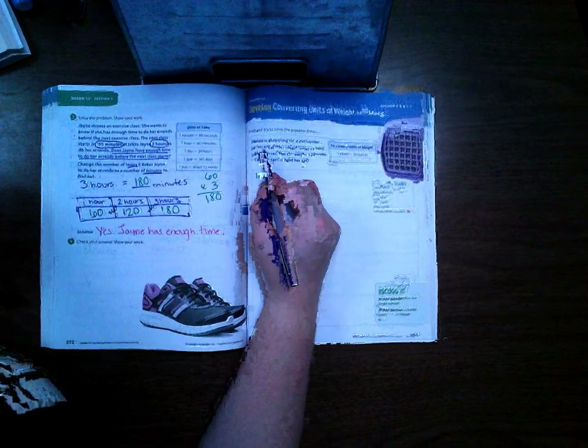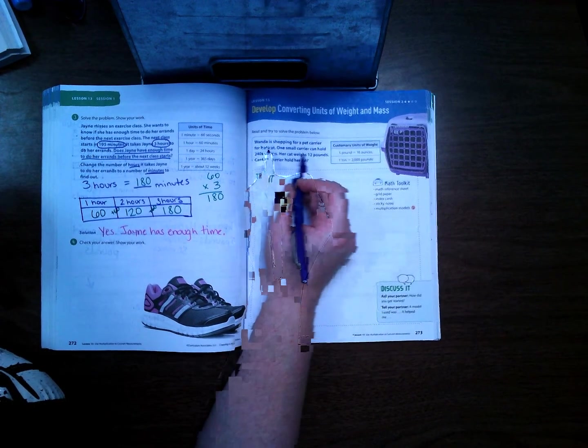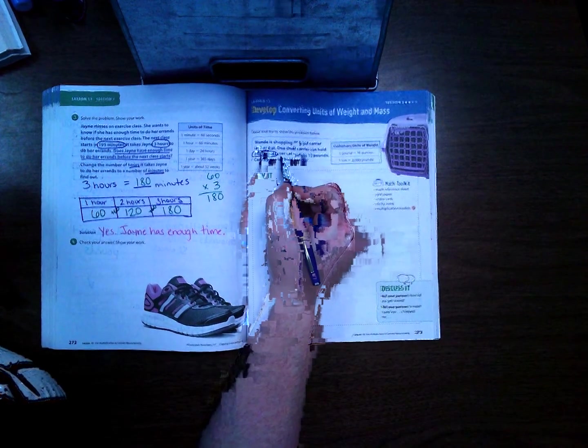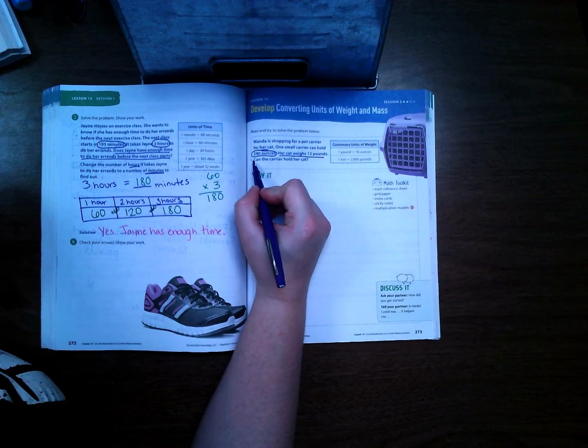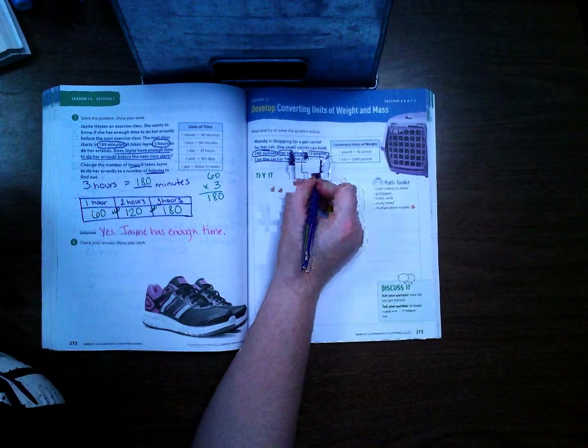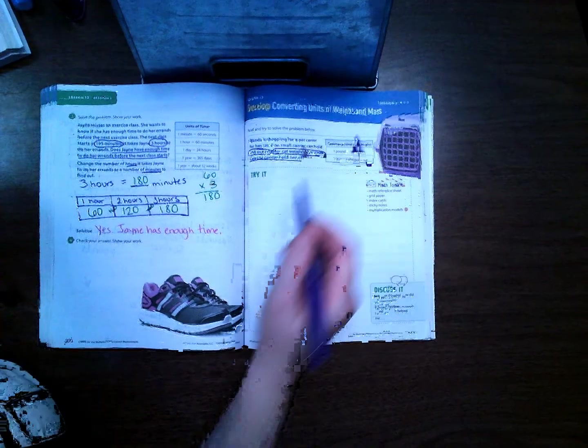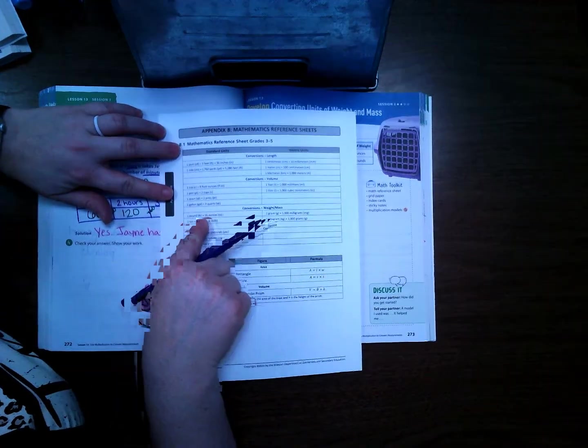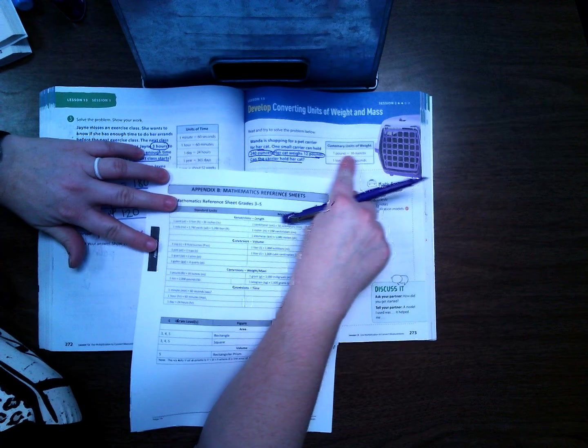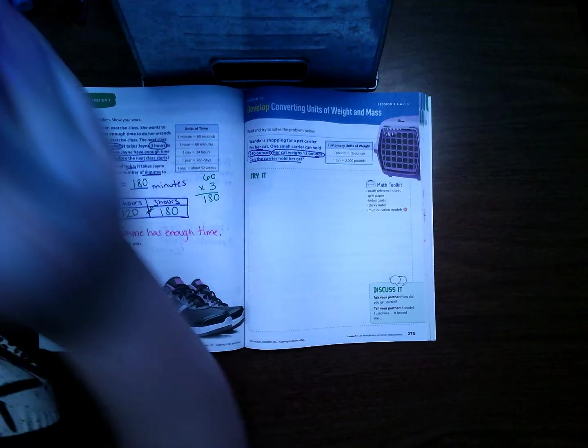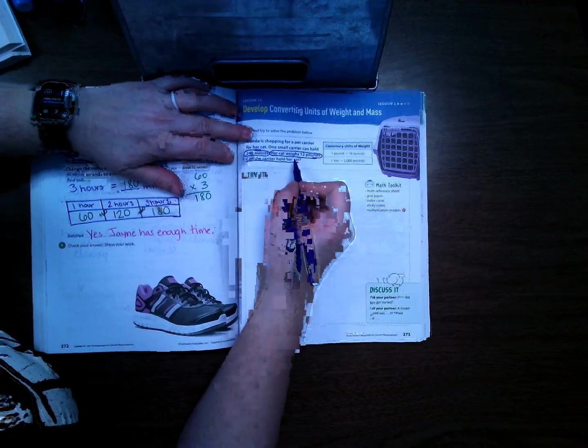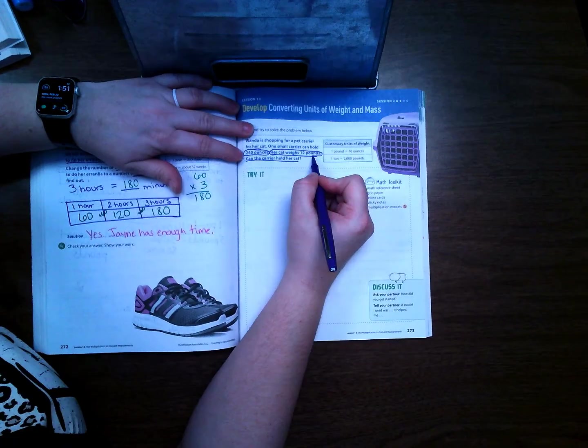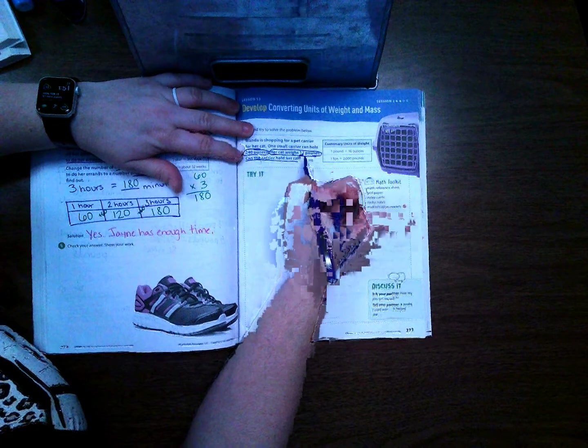Wanda is shopping for a pet carrier for her cat. One small carrier can hold 240 ounces, her cat weighs 12 pounds. Can the carrier hold her cat? Right here it gives us our measurement, but I want you to go over here. We're working with pounds and ounces, so I'm going to find pounds and ounces on here. I see that one pound equals 16 ounces.